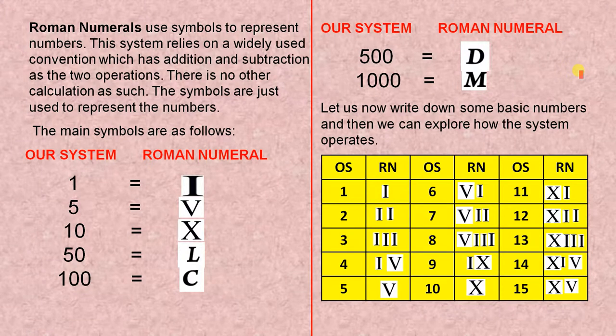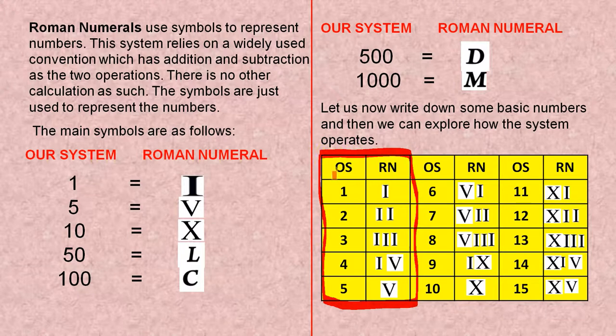Let us now write down some basic numbers and then we can explore how the system operates. These are just the numbers from 1 to 15. I've got our system here. OS means our system from 1 to 5, Roman numerals from 1 to 5. Our system from 6 to 10, Roman numerals 6 to 10, and our system 11 to 15, Roman numerals 11 to 15.